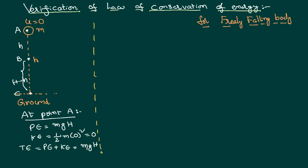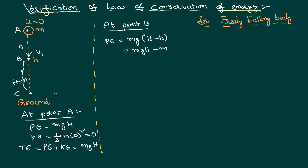Now consider point B, somewhere in the journey. At point B, though the initial velocity was zero, by the time it reaches point B it will have acquired some velocity, so it will have both potential and kinetic energies. Potential energy is MG times (H minus h), since from the reference point it is at a height of H minus h. Kinetic energy formula is half M V1 squared, but I want to express V1 in terms of height h.